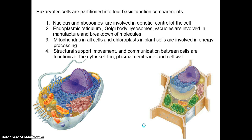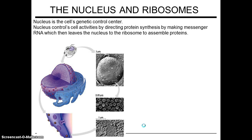The structural organelles are the plasma membrane, cytoskeleton, and the cell wall. Now, the nucleus and the ribosome — the nucleus is called the control center because it has a recipe to make proteins. When a cell needs a protein, that DNA is activated and then that recipe is transcribed to a molecule called messenger RNA, which then leaves the nucleus and goes to the ribosome to make that particular protein. That's how it controls the activities of the cell.